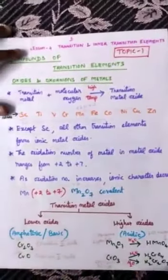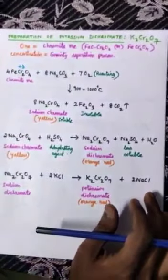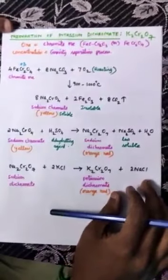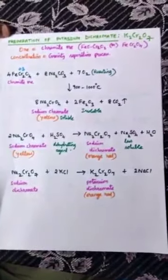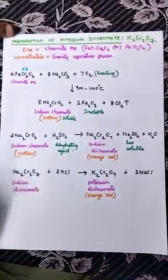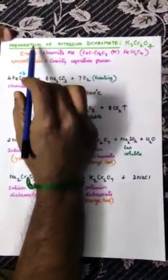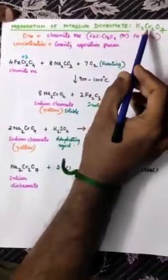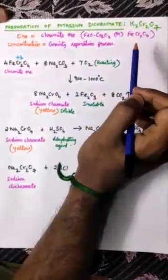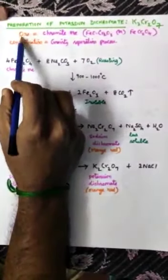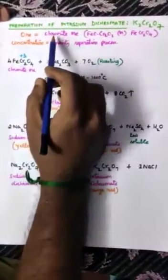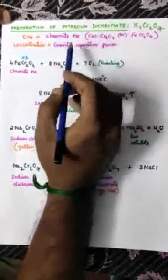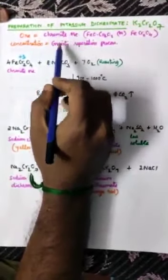So those are the lower oxides and higher oxides. Next: preparation of potassium dichromate. The formula for potassium dichromate is K2Cr2O7. The ore used to prepare potassium dichromate is chromite ore — note that the textbook says chromate ore, but that is incorrect; it should be chromite ore.